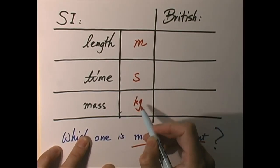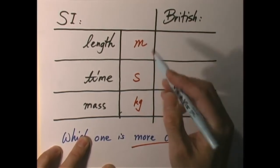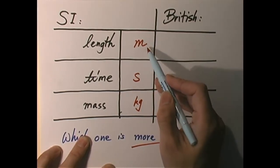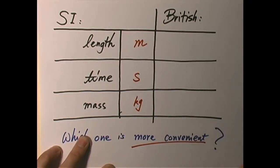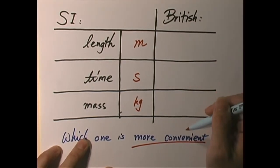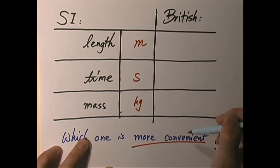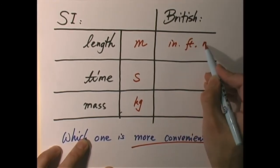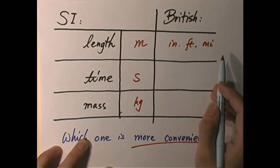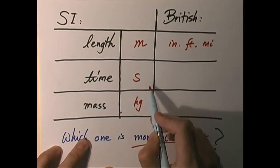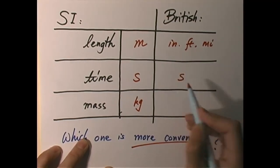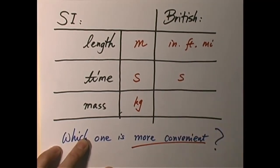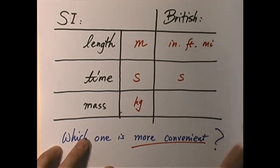For time, fortunately both SI and British use the same thing — seconds, with minutes and hours based on seconds. Now the interesting thing is mass. What is the British unit for mass? Many people guess pounds, but that's not quite right. The reason is that it's easy to confuse mass and weight. Pound is actually a unit of force.